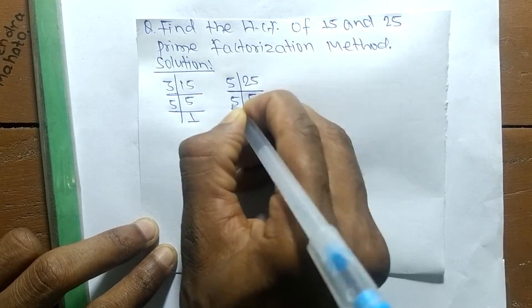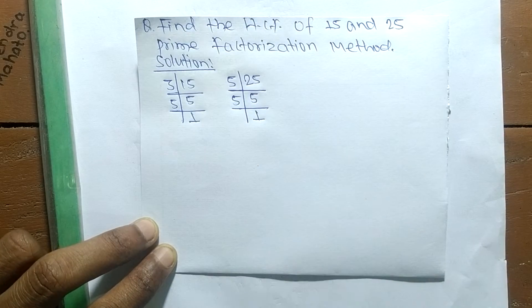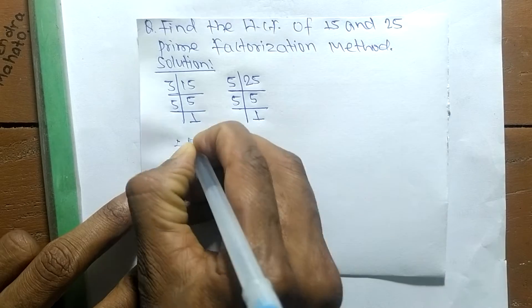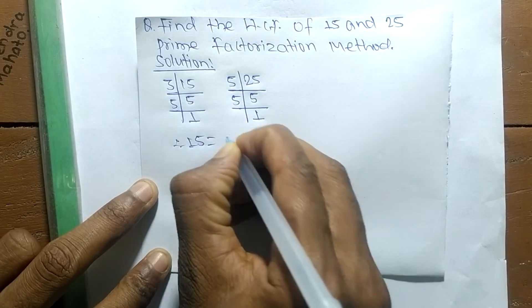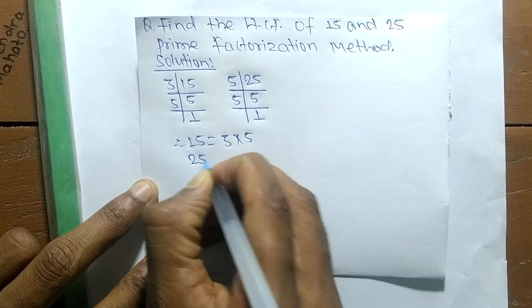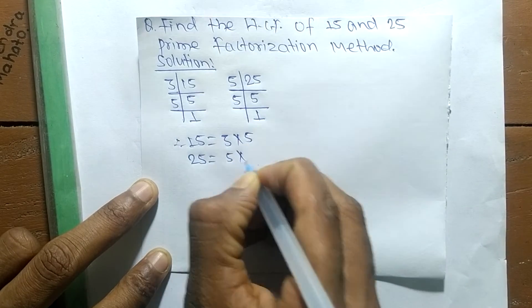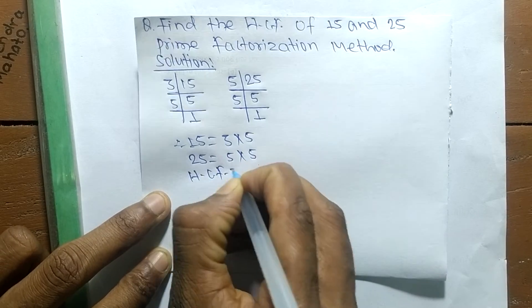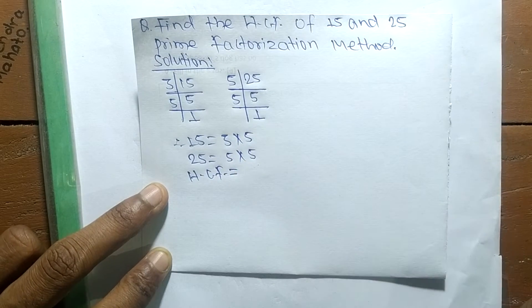So from these prime factors we can write 15 is equal to 3 times 5, and 25 is equal to 5 times 5.